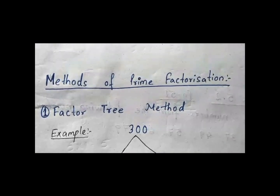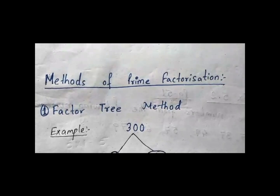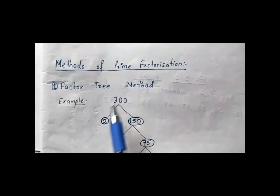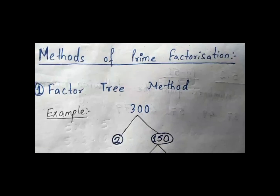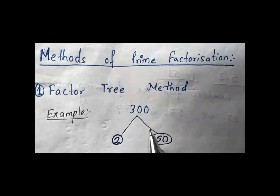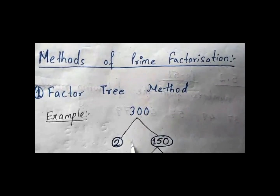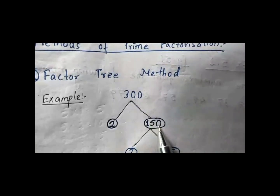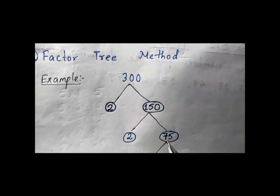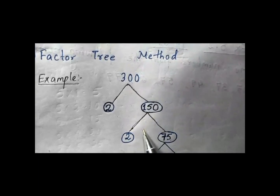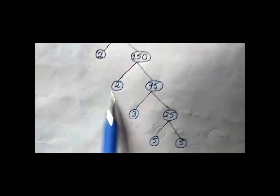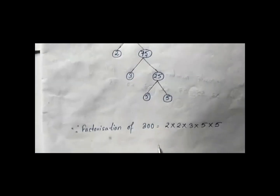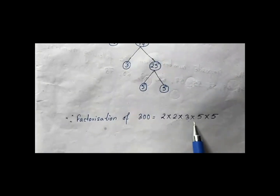There are two methods of prime factorization: the factor tree method and the division method. Let us learn the factor tree method with the example of 300. We break 300 into 2 and 150, then break 150 into 2 and 75, then break 75 into 3 and 25, then break 25 into 5 and 5 — all prime numbers. So the prime factorization of 300 is 2 × 2 × 3 × 5 × 5.